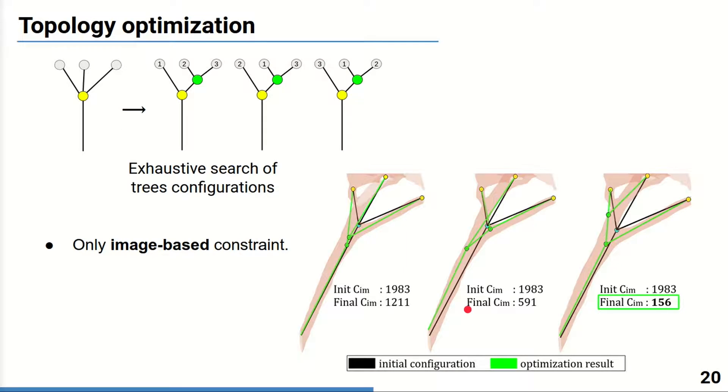To do so, on the image cost is taken into account, as slack minimization is not appropriate locally at one branching. So first, we generate a set of compatible topology configurations by exhaustive search, and then the best configuration is chosen as the one having the minimum image-based cost. For a given example, it is the configuration on the right.